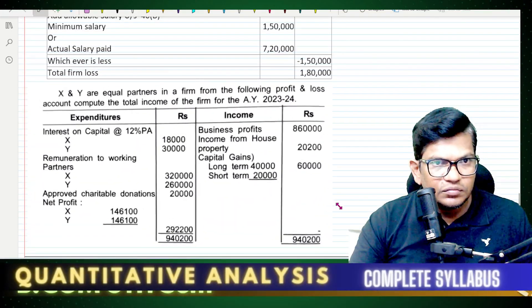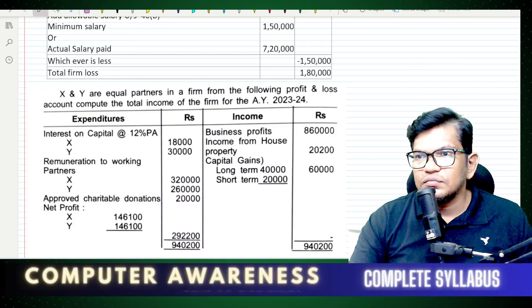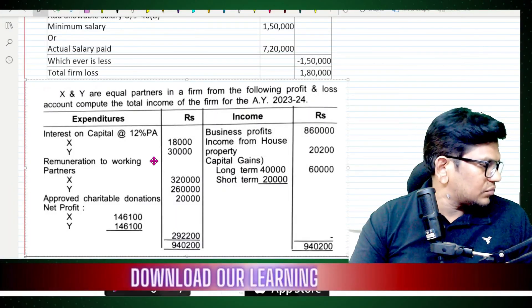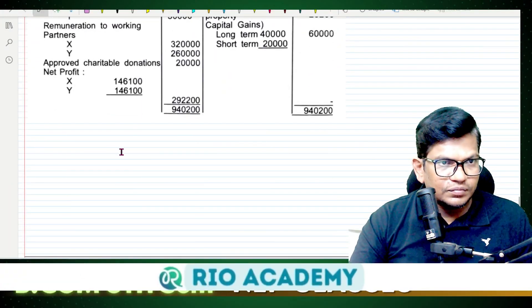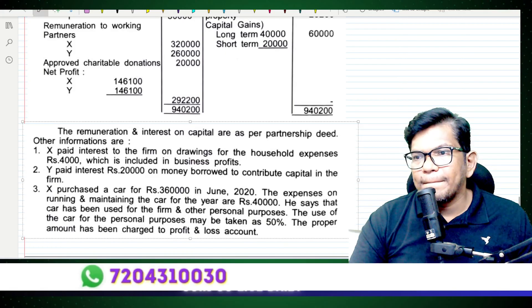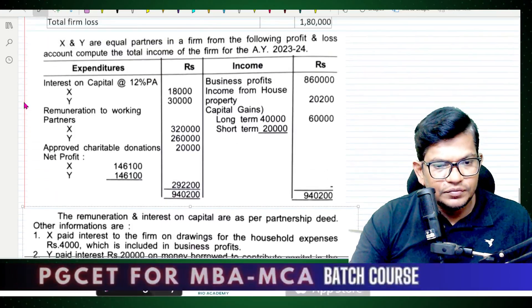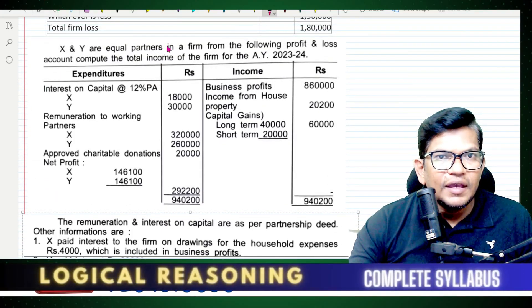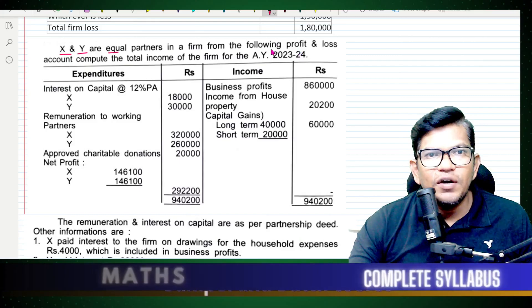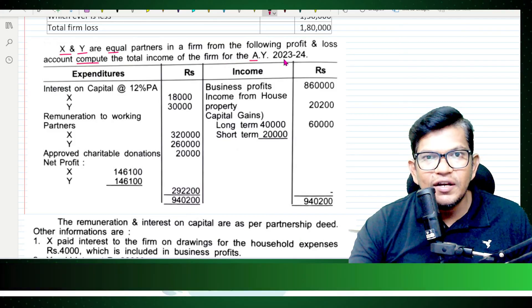Let's start now. X and Y are equal partners in a firm. The following is the profit and loss account of the firm. Compute the total income for the assessment year 2023-24.